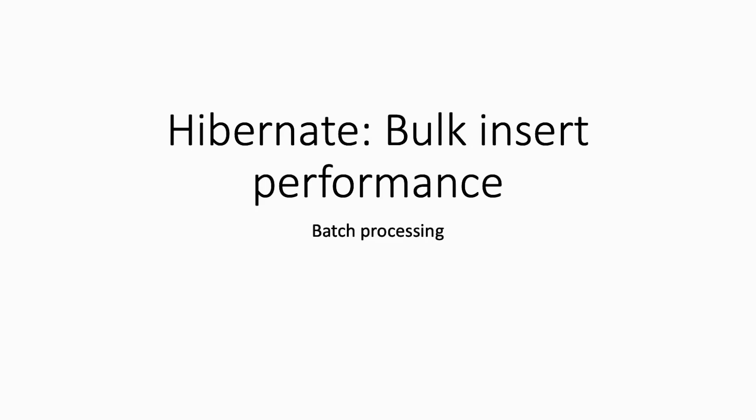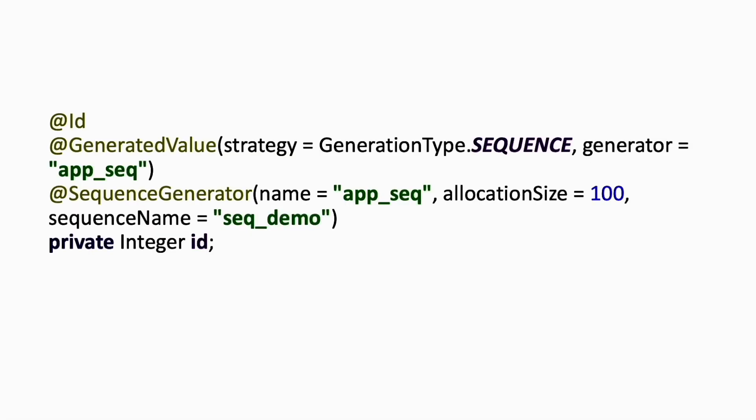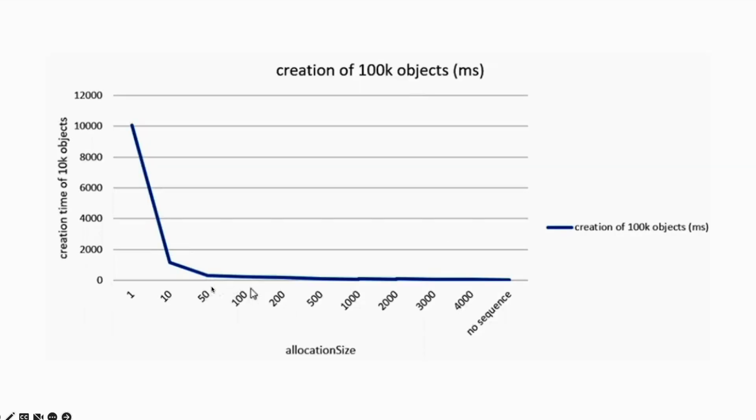Hi and welcome to this video. Previously we saw how to mitigate performance issues related to bulk entity persistence in Hibernate when using database sequences to generate identities. We saw that when creating each entity there is a round trip to the database to get the id from the sequence, which is very expensive and results in poor performance. Fortunately, using the allocation size parameter we can tell Hibernate to retrieve multiple ids at once, which reduces the number of round trips to the database and improves performance. We have seen that starting from the value 50, the performance is optimal.